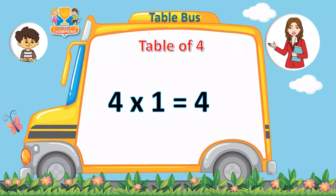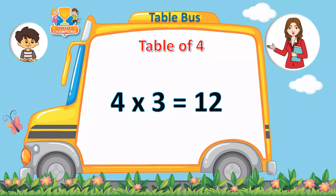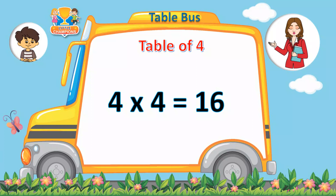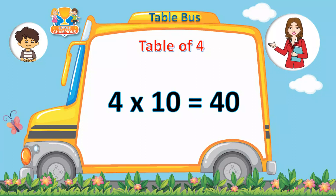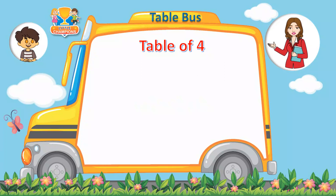Four ones are four. Four twos are eight. Four threes are twelve. Four fours are sixteen. Four fives are twenty. Four sixes are twenty-four. Four sevens are twenty-eight. Four eights are thirty-two. Four nines are thirty-six. Four tens are forty.